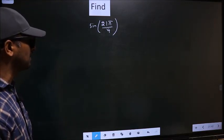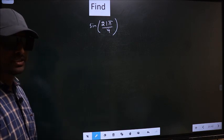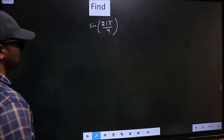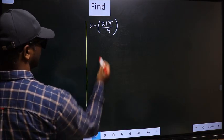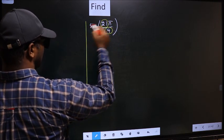Find sine 21 pi by 4. To find this, we should follow this method. In the denominator, we have 4. In the numerator, we have 21.